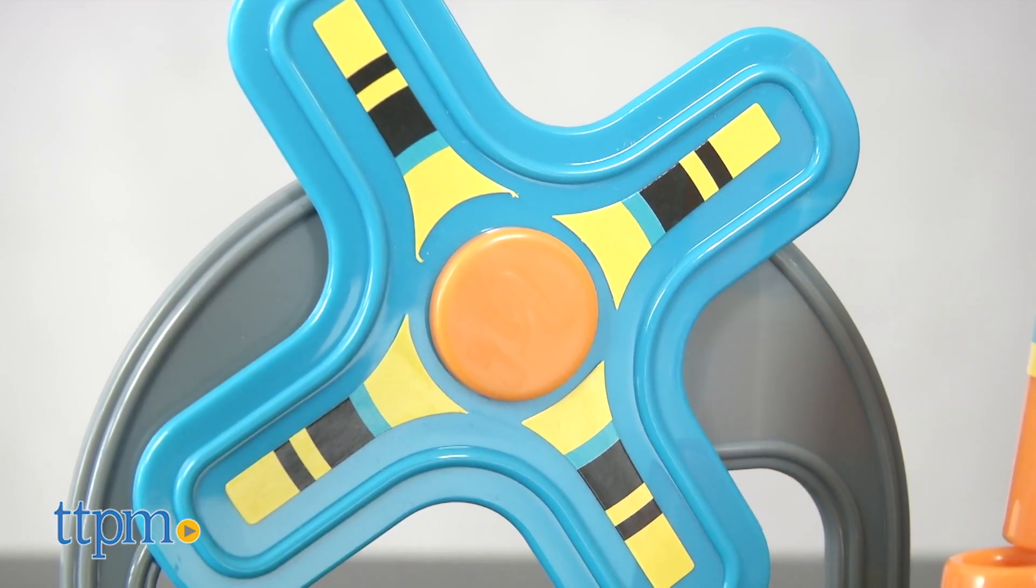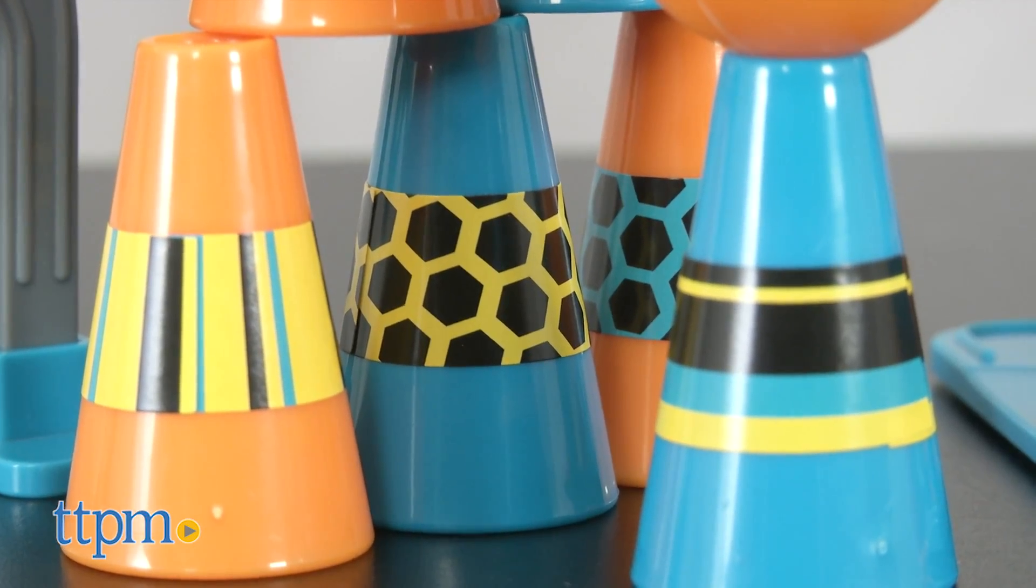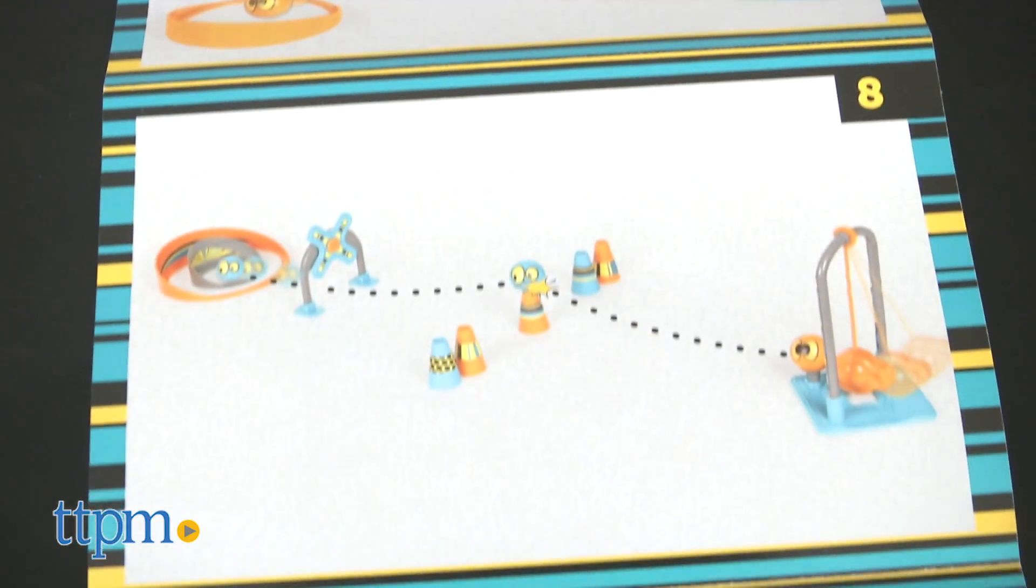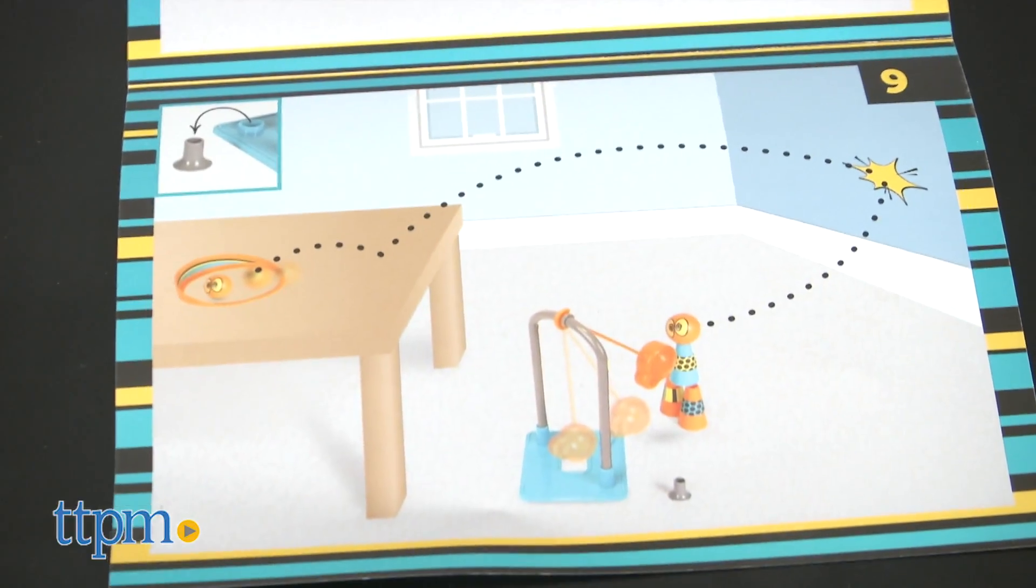An adult may need to assist with sticker application. The booklet illustrates 9 challenges ranging from relatively simple to, oh my, how am I going to do that?